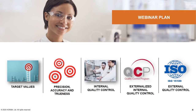I will first talk about the target values, which are the key of the quality control, and then I will explain the differences of very often confused notions, which are precision, accuracy, and trueness. After having clarified those notions, I will explain the specificities of the different quality controls: internal quality control, externalized internal quality control, and external quality control.